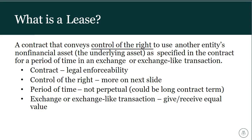What is a lease? GASB 87 defines a lease as a contract that conveys control of the right to use another entity's non-financial asset. The underlying asset is specified in the contract for a period of time in an exchange or exchange-like transaction. This requires four different elements: a contract that is legally enforceable whether written or verbal; control of the right to use; a term longer than 12 months; and both parties give and receive equal value. A nominal amount such as $1 per year would not be considered an exchange-like transaction.